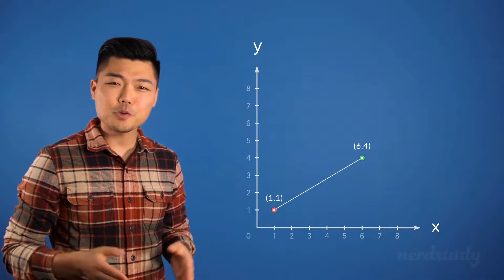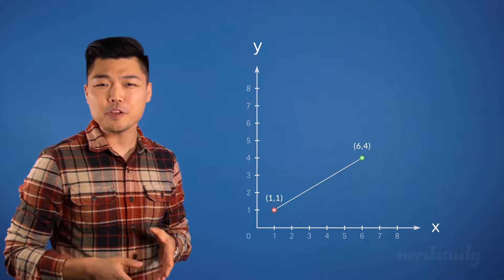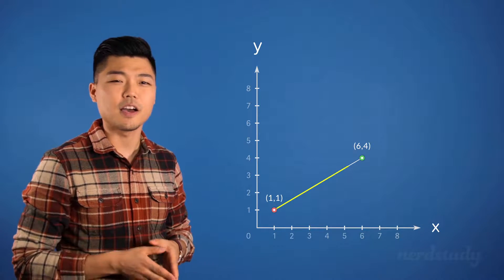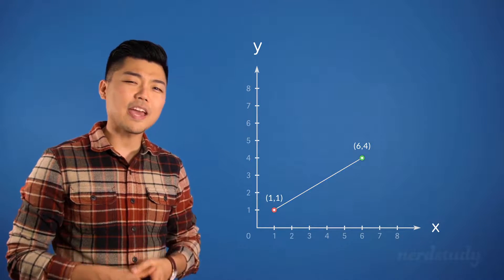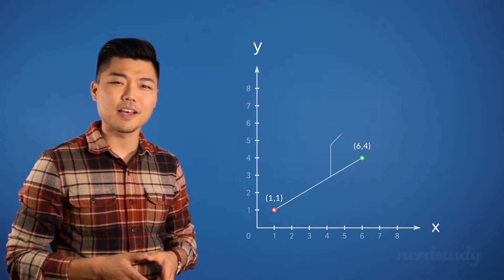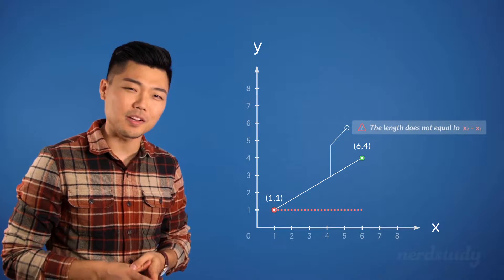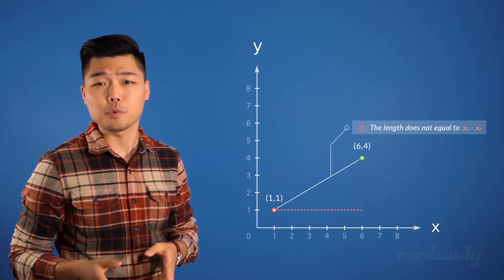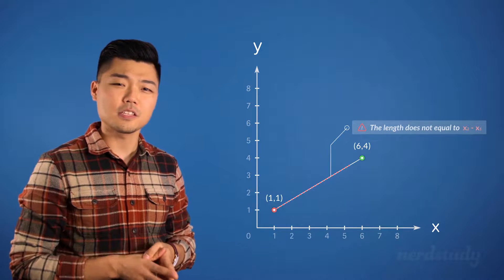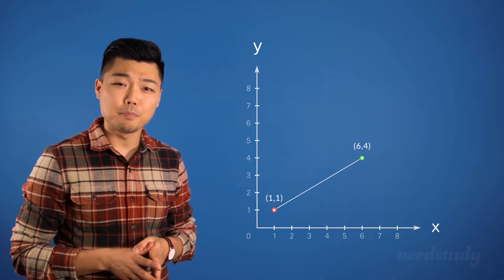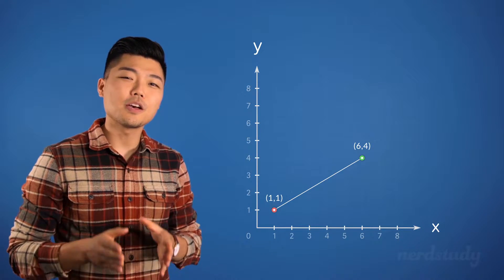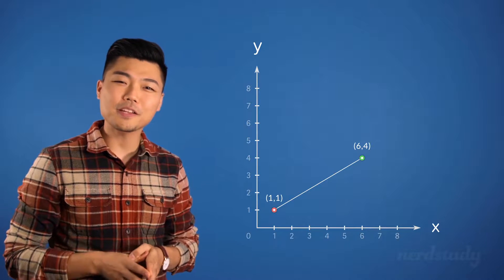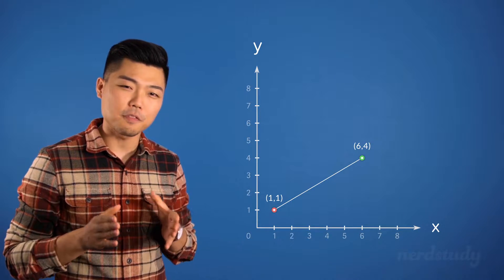Well, let's try an example to find out how we can find the length of this line. We know that we can't simply say that the line is equal to x2 minus x1, since this is a slanted line and the line length would be longer than this distance. But we can use the Pythagorean theorem to correctly find the length of this.